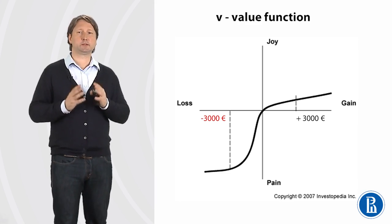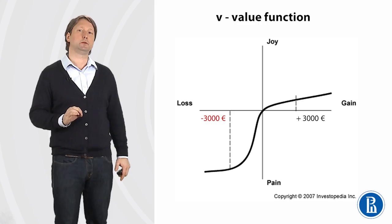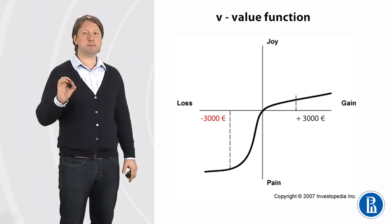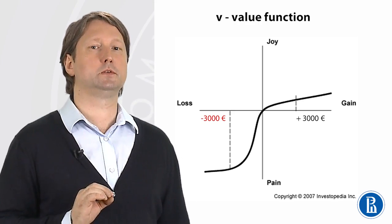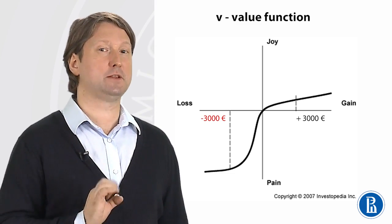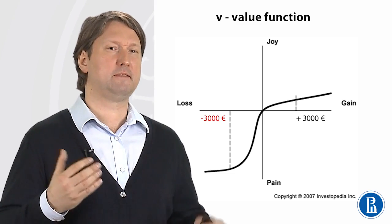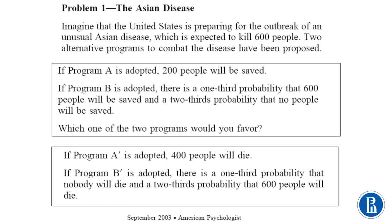I will just mention that the value function is really asymmetrical — steeper for losses than for gains. So a loss of 3,000 euros triggers much stronger pain than the same gain of 3,000 euros. This asymmetry at the behavioral level — our tendency to be risk seeking in the loss domain and risk averse in the gain domain — can be nicely illustrated by the Asian disease problem.